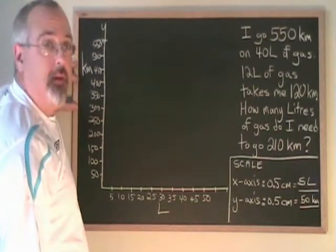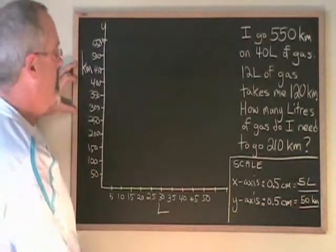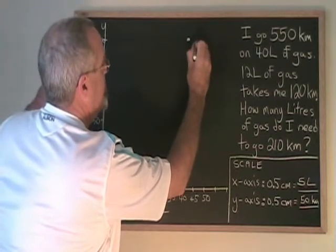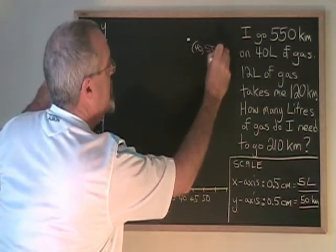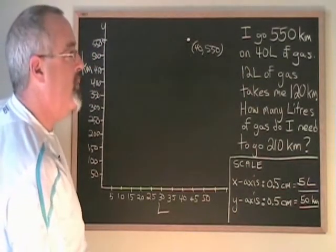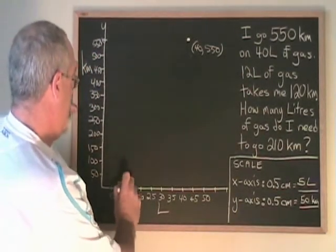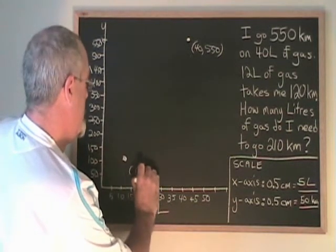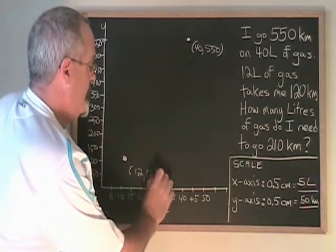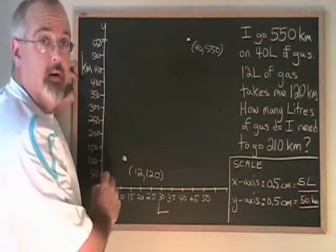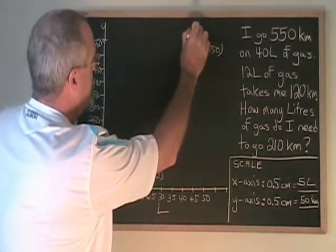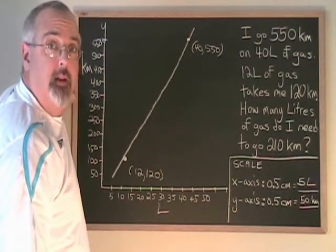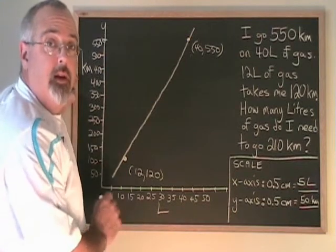Now it's time to plot my points. 550 kilometers on 40 liters of gas gives me a point here. 12 liters of gas and 120 kilometers gives me a point right about here. Use a ruler to draw a line. I don't have a ruler, but make sure on your paper that you use a ruler to draw a line through these two points. The neater your graph and the straighter you draw your line, the more likely you are to get the right answer.